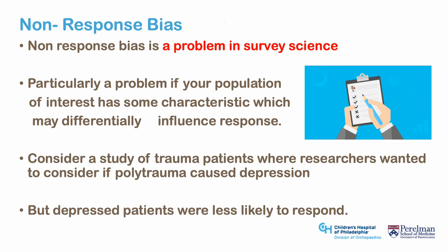Non-response bias is an issue with survey science. It can produce a survivorship bias in that it is not clear if there is some difference between those who respond and those who do not respond to a survey. This is particularly true if your population has some characteristic that may differentially influence answers. For example, in orthopedic trauma patients comparing depression to magnitude of injury, depressed patients may be less likely to respond. This becomes more of an issue as response rate falls below 70%. One can check for non-response bias by comparing demographics in respondents versus non-respondents.